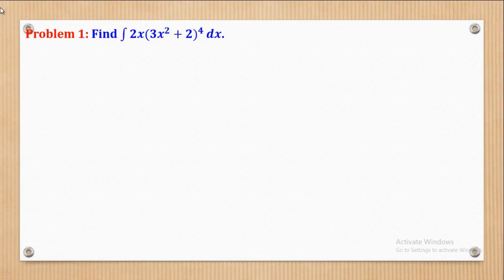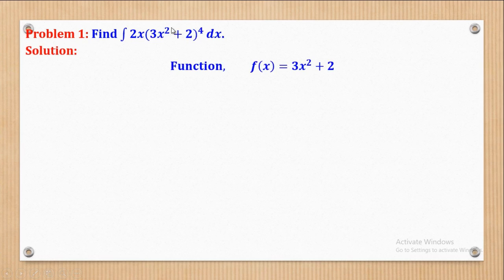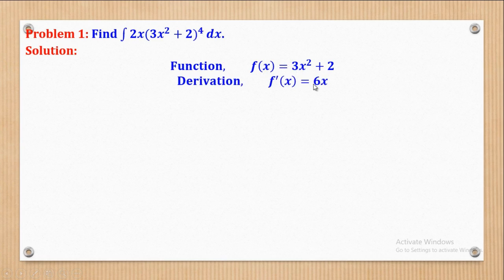Now we go to problem one. Problem one says: find the integral of 2x times (3x² + 2) raised to the power 4. In this case, the expression inside the bracket with the power is our f(x). The first step is to find its derivative — when I differentiate (3x² + 2), I get f prime of x as 6x. Comparing this derivative with 2x outside the bracket, they are not the same, but we can make them the same by multiplying by 3.